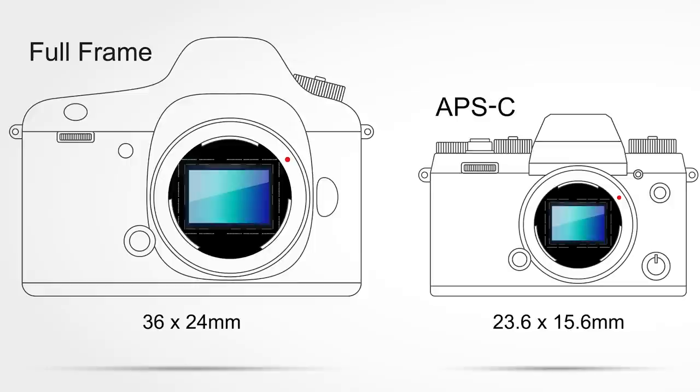If you are concerned about which camera to use, there are two types available in the professional series: full-frame cameras with a 35mm sensor, and amateur cameras with an APC crop sensor size.